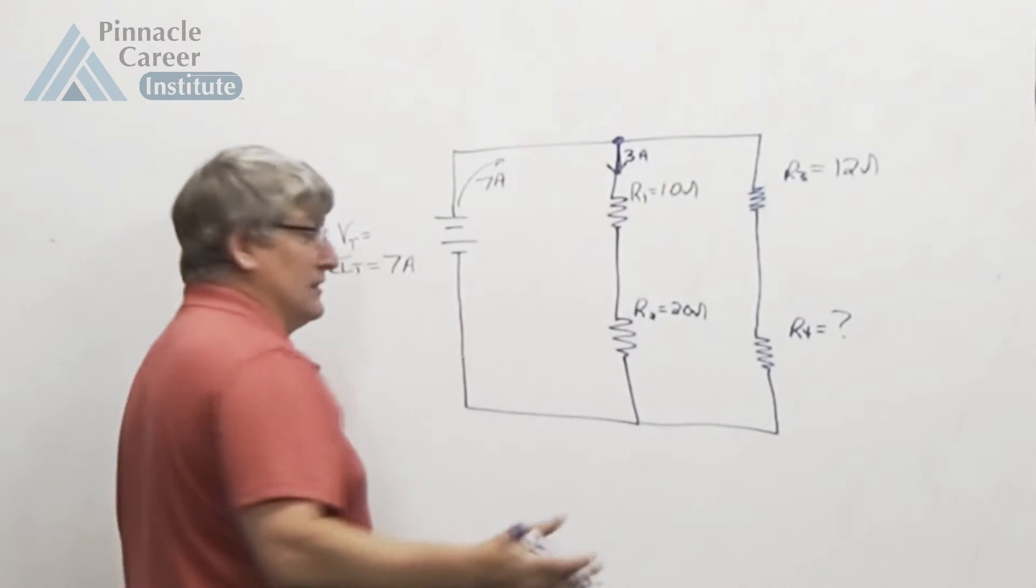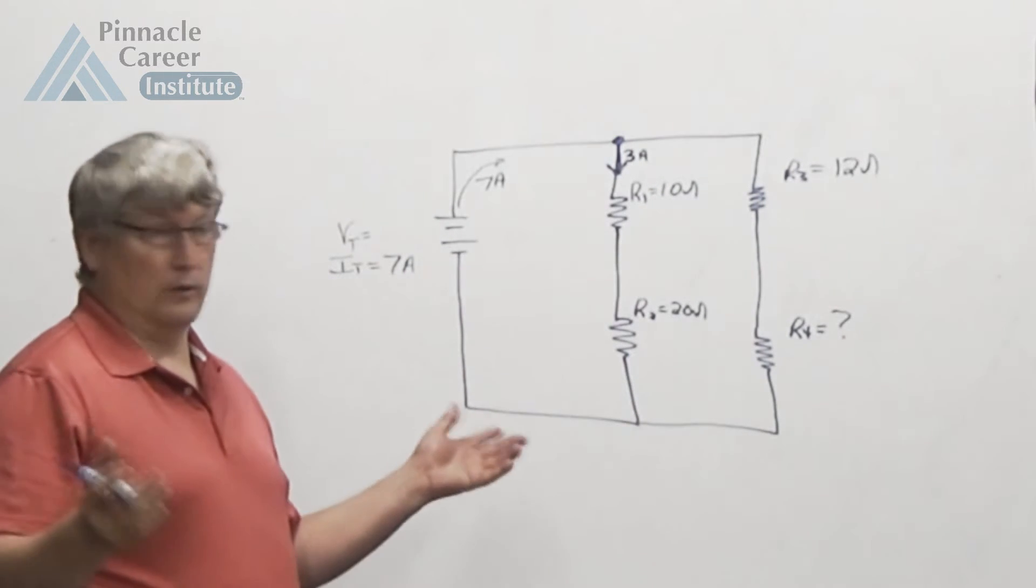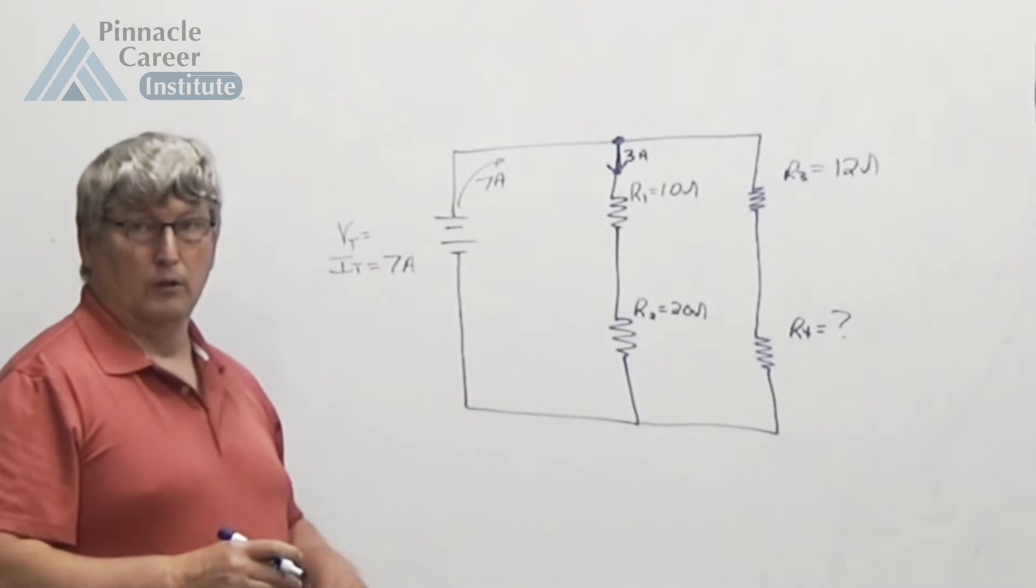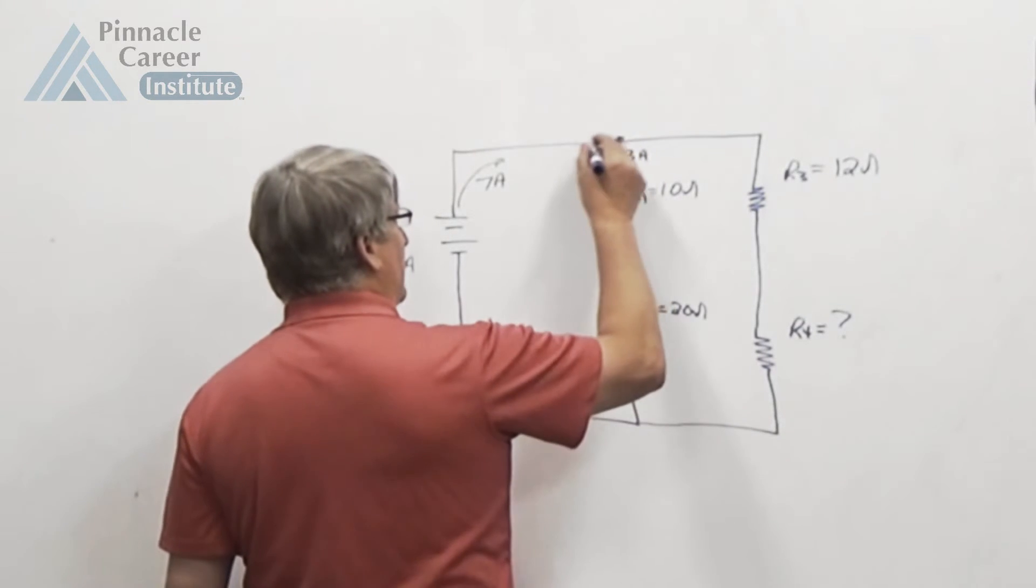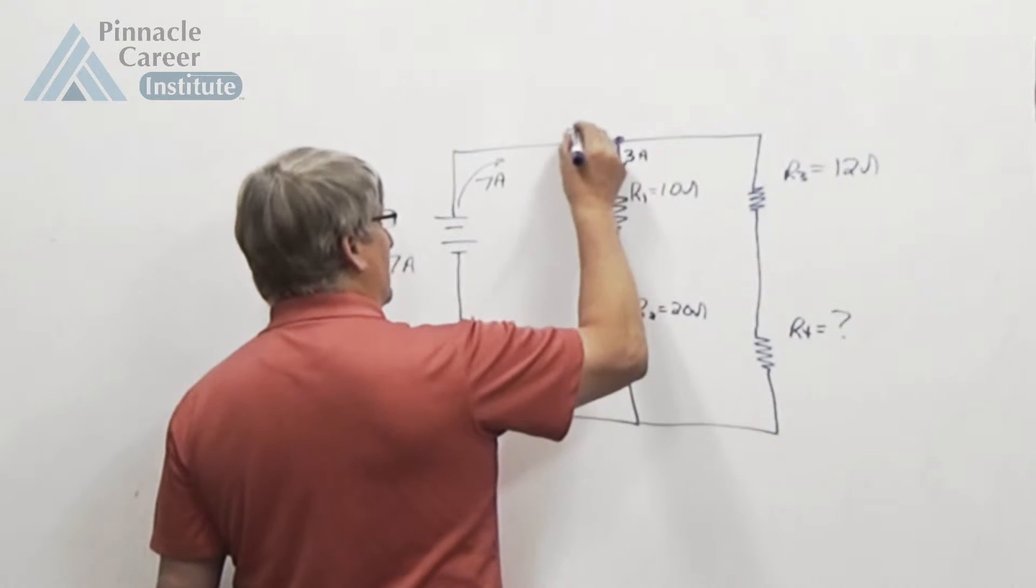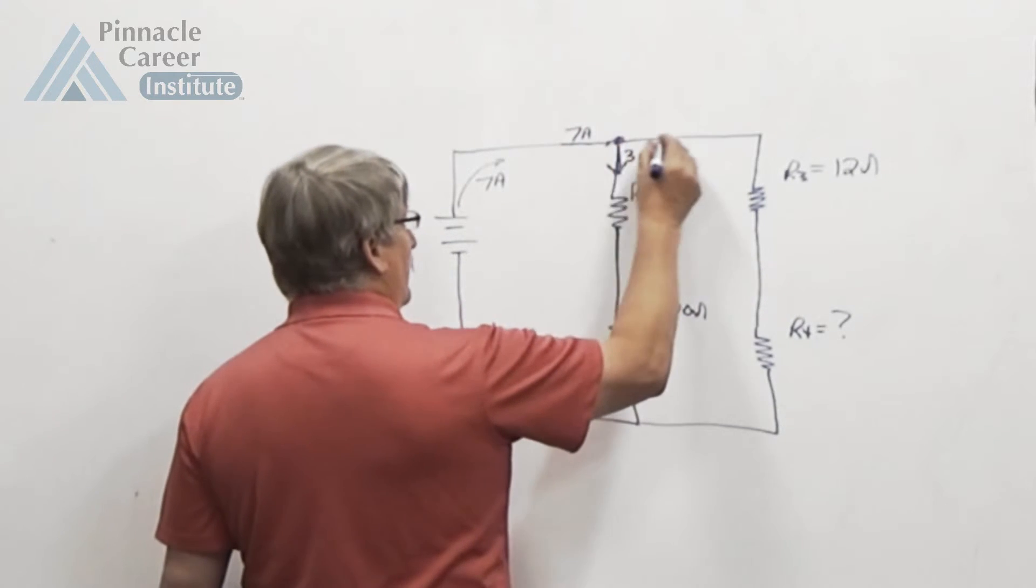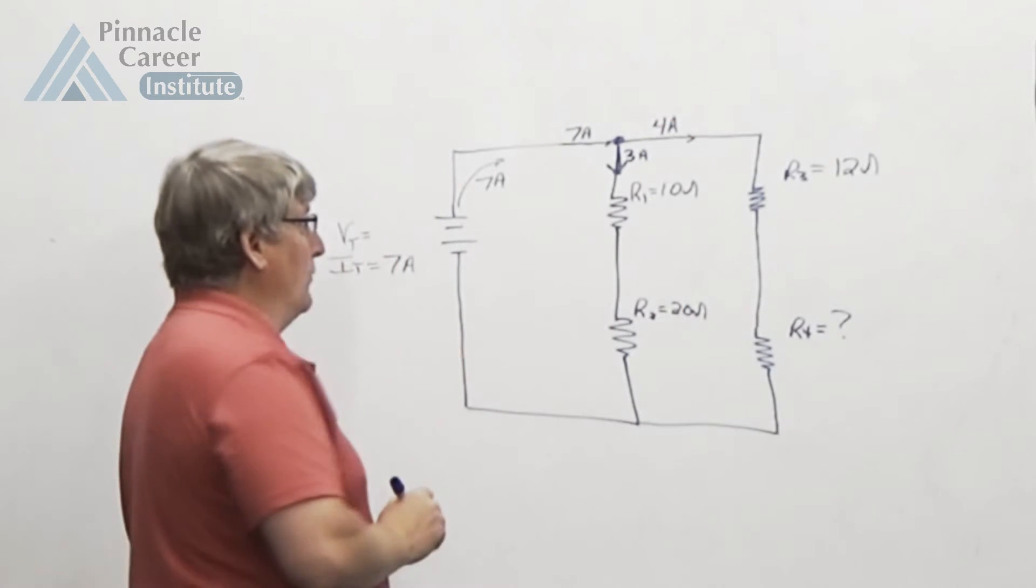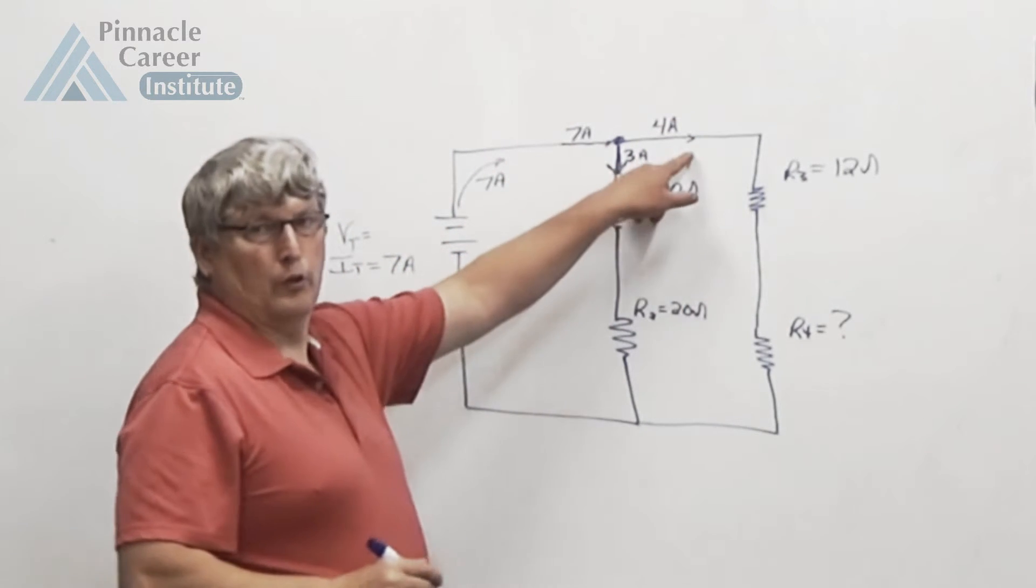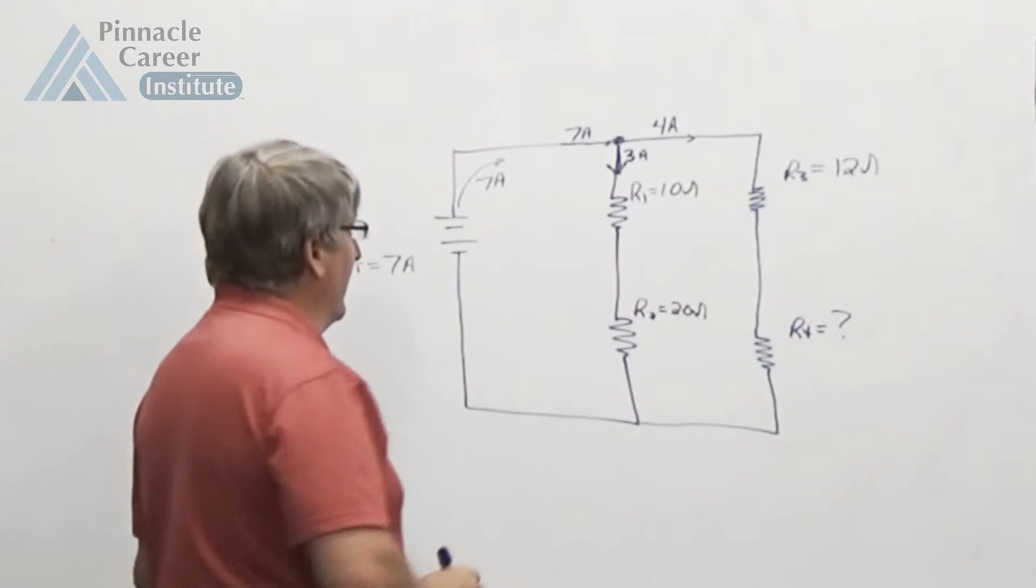Well, the first thing I see that I want to do, the first puzzle I want to solve is Kirchoff's current law, the nodal equation. If I know I got 3 amps coming this way and I got 7 amps coming in total, that means I have 4 amps going that way, because all the current entering a node has to equal all the current leaving a node.